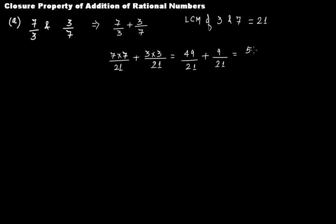21, this is 7 times 3 is 21, so 3 times 3. So 49/21 plus 9/21, you get 58/21.